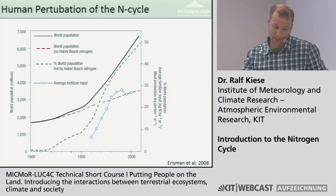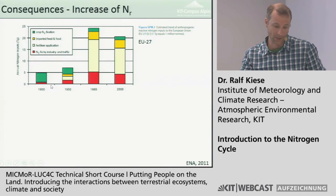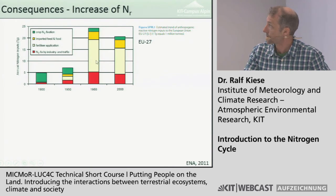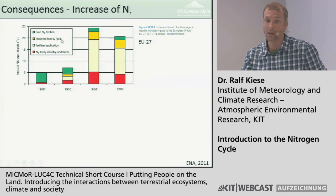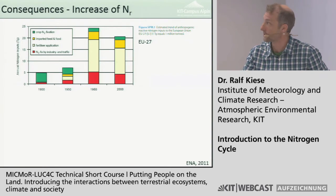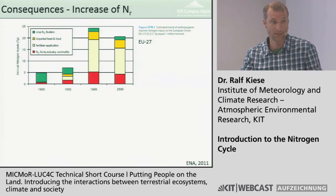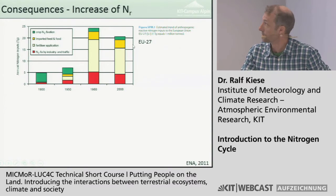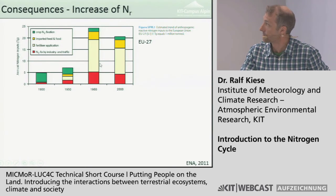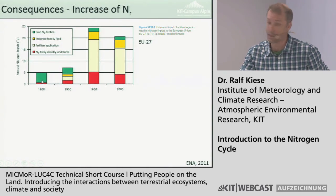Looking at the increase in synthetic fertilizer: for the EU in 1900, most fixed nitrogen was from legumes. Then we dramatically increased synthetic fertilizer applications. There is also N2 fixed by industry and traffic from combustion processes. Europe has high animal production systems, requiring imported crops such as from Brazil to feed animals — bringing not only carbon but also nitrogen into markets. Overall, we have roughly four times higher nitrogen inputs in Europe than in 1900.